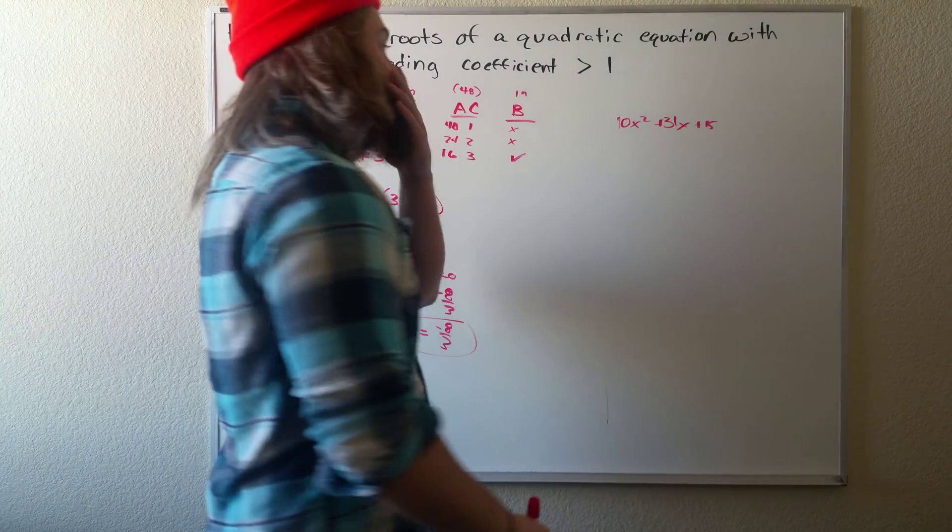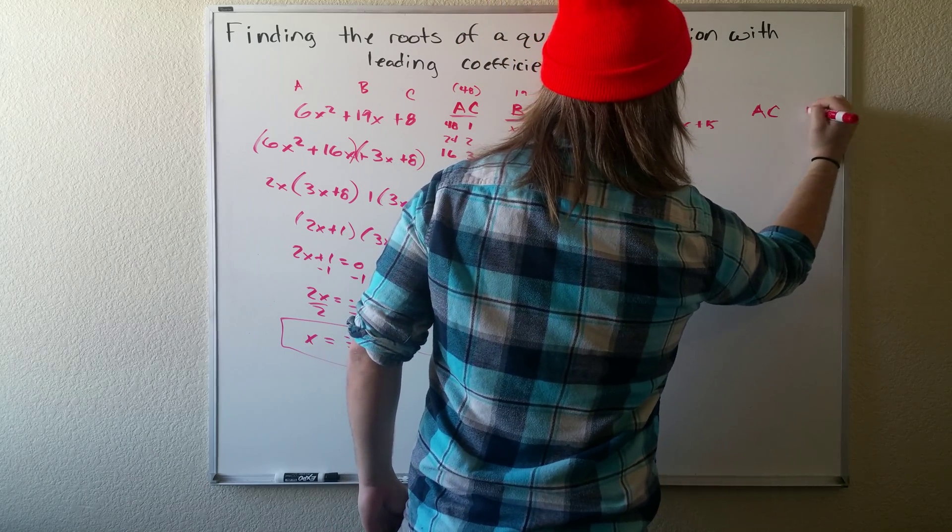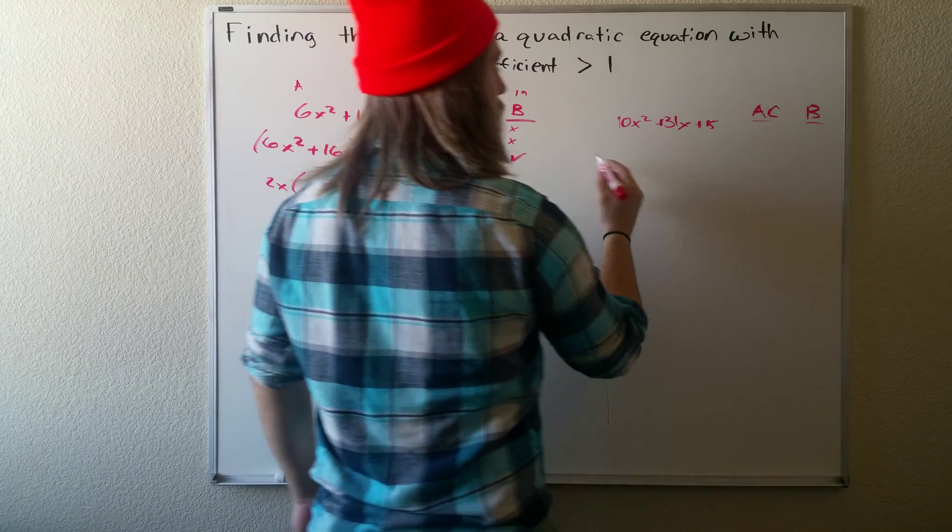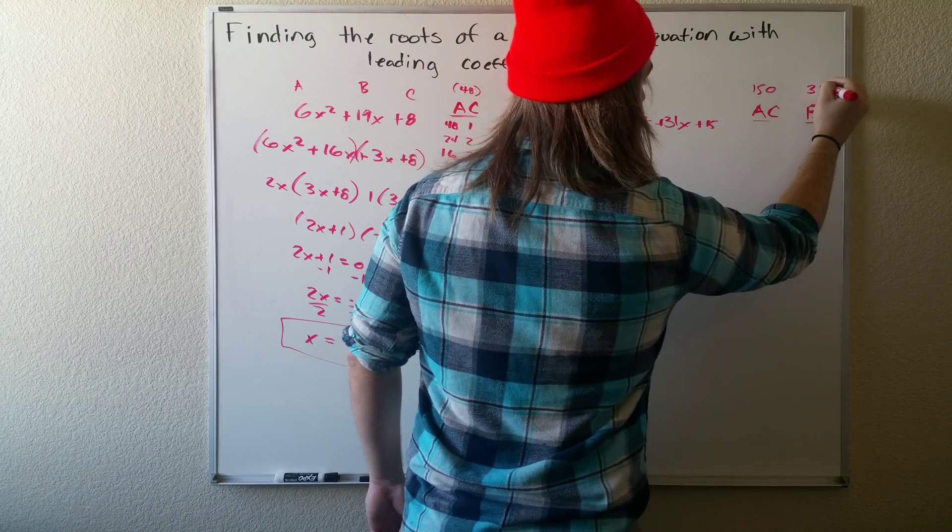Alright. For our second problem, I'm going to go a little bit faster. So we have A, C, B again. And then our A times C is 150. Our B is 31.